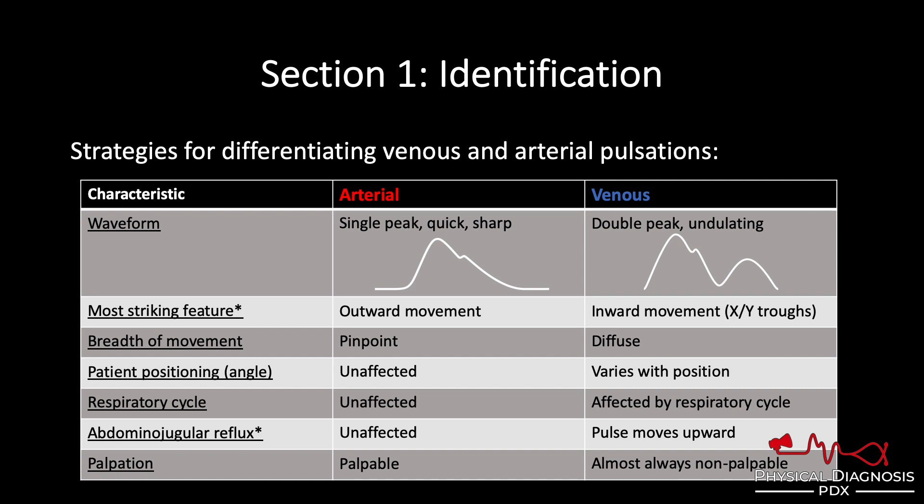The venous pulse, on the other hand, is the exact opposite. The outward peaks of the venous pulse are passive — they're hardly noticeable. It's the inward movements that are active and will catch your eye: the x and y troughs. That's probably the best strategy, and the one I use most often. If I see movement in the neck and I see an inward component, I'm done — I know that's venous.